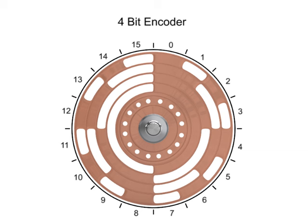In a four-bit encoder there are 16 unique combinations or numeric code every 22.5 degrees.